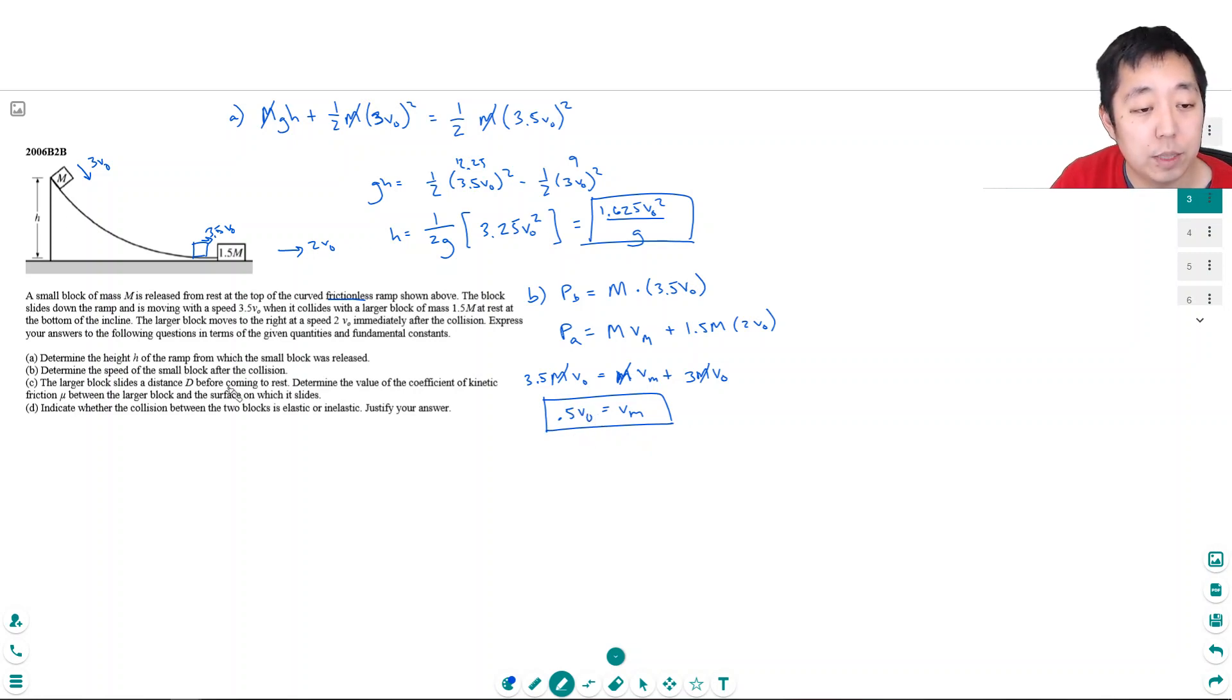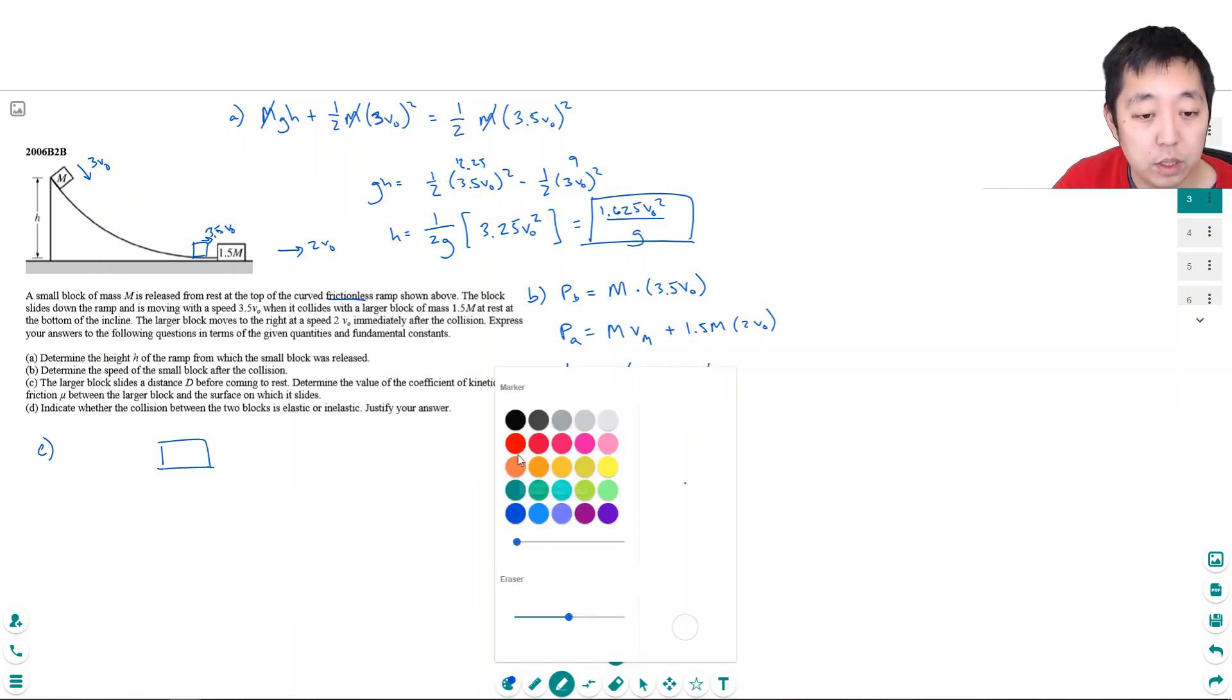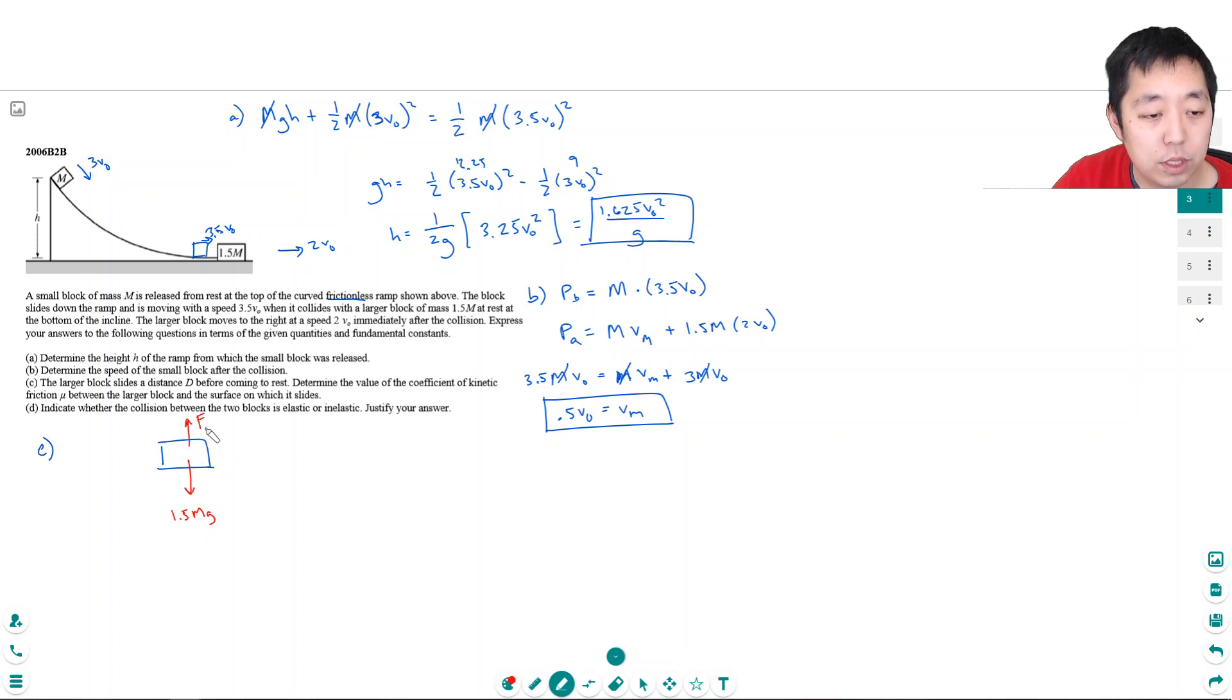The larger block slides a distance D before coming to rest. Determine the value of the coefficient of kinetic friction between the larger block and the surface on which it slides. Okay, so that means for C, it's coming to rest at a distance. So I have to figure out the acceleration. Well, if I do a free body diagram on this guy, he's got a force downward of 1.5Mg. He's got a normal force. And then he has a frictional force acting on him. And that's it, right? As he's sliding along here.